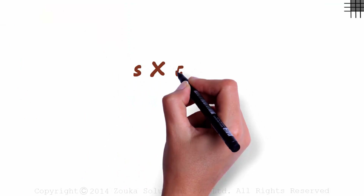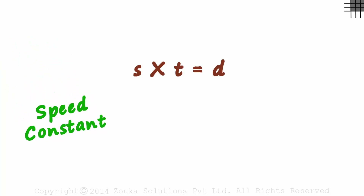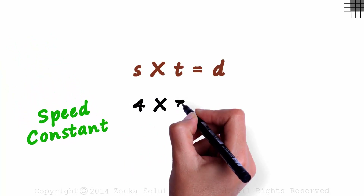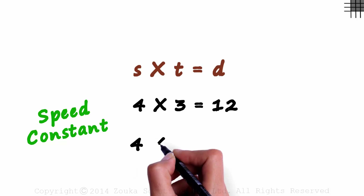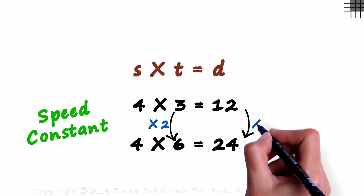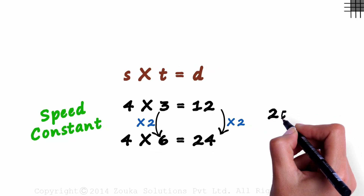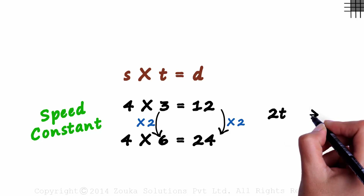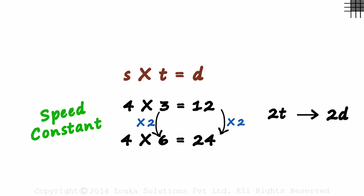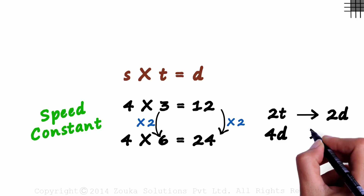We know that speed multiplied by time is equal to distance. Let's assume the speed is constant. 4 times 3 is equal to 12, and 4 times 6 is equal to 24. The speed is constant, the time is scaled up by a factor of 2, and the distance is also scaled up by a factor of 2. So when speed is constant and time is multiplied by 2, the distance will also be multiplied by 2. If distance is multiplied by 4, then the time taken will also be multiplied by 4.